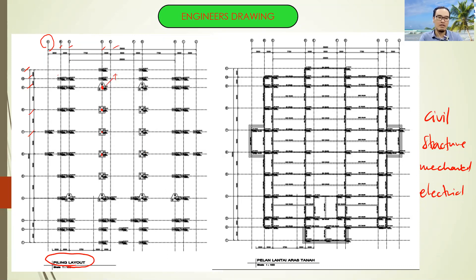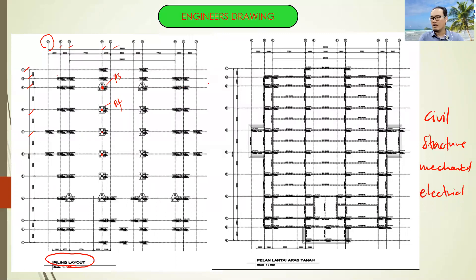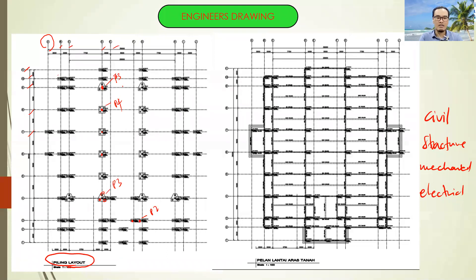Either type P3 for pile cap 3 or P4 for pile cap 4 — pile cap that has 4 number of pilings. It will also give you the number of pile foundation. P3 contains 1, 2, and 3 piles. If you have 2, it should be P2. P4 contains 4 number of piles.